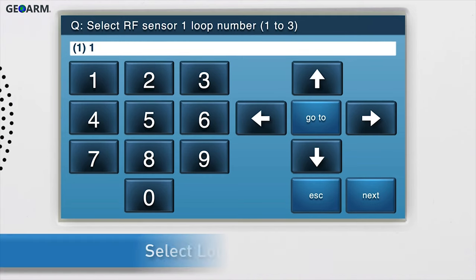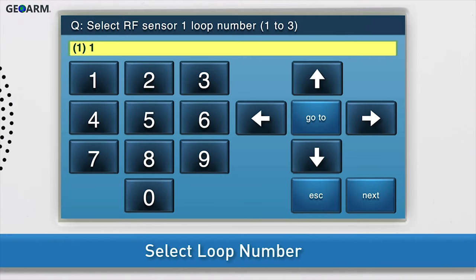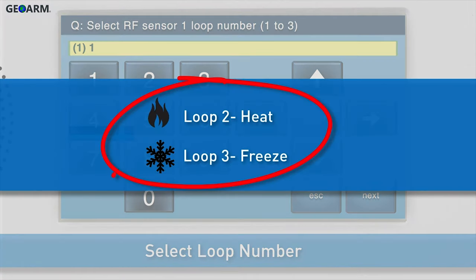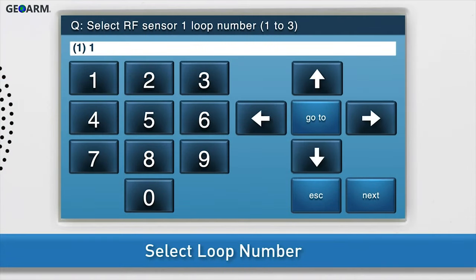Next, select the loop number. Select Loop 1 for the smoke detection feature. We will not be using loops 2 and 3, as these are reserved for the heat and freeze functions. Press the down arrow to go to the next sub-question.